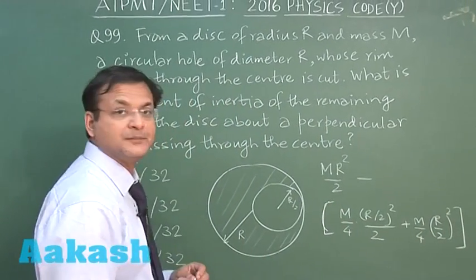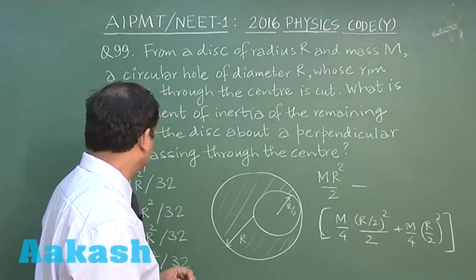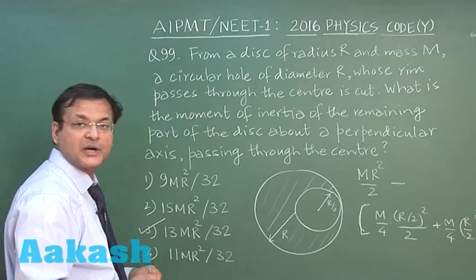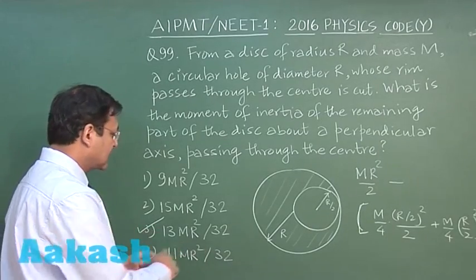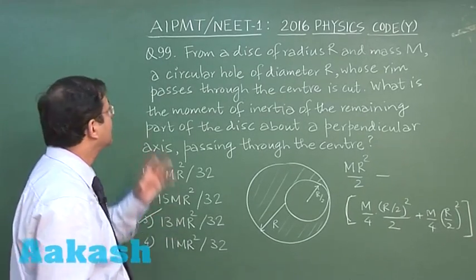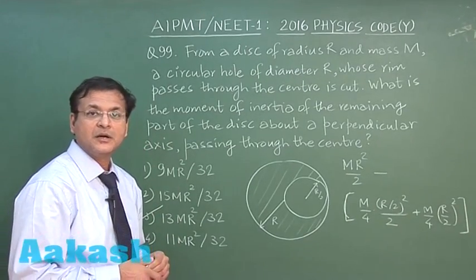So if you do the calculation, you will find that the correct answer is coming out to be 13 mr square upon 32. So the correct answer for this question will be answer 3. Now let us look at next question, question 100.